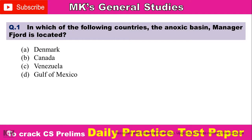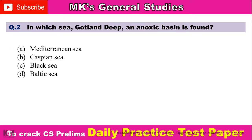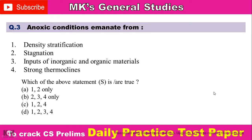Next question: In which sea is the Gotland Deep anoxic basin found? Option A: Mediterranean Sea, Option B: Caspian Sea, Option C: Black Sea, Option D: Baltic Sea. Comment your answer here.